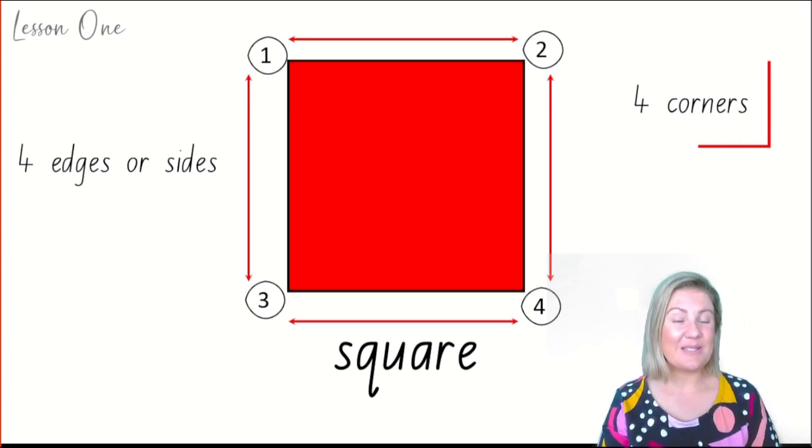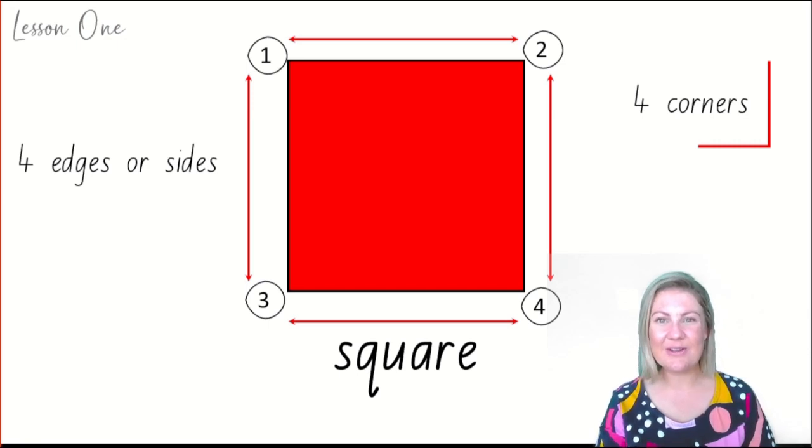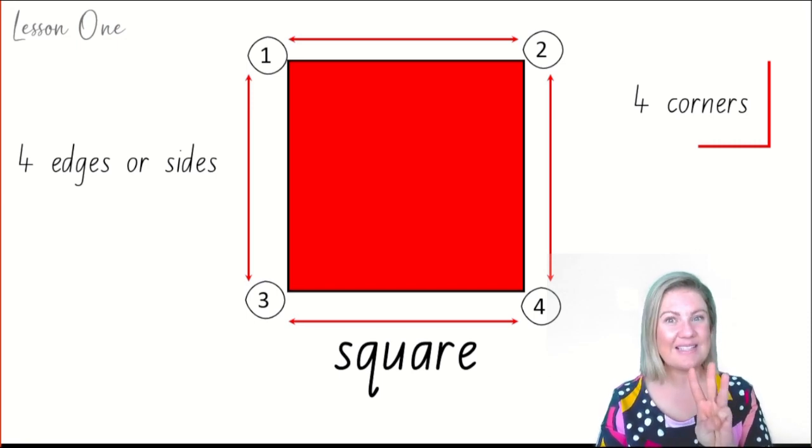Can you spot any squares around you? Do the same thing as what you did with your circles. Can you stay where you are but use your eyes to look around and spot three squares? You might find a big square or a small square. Try and find three squares with your eyes, little mathematicians.